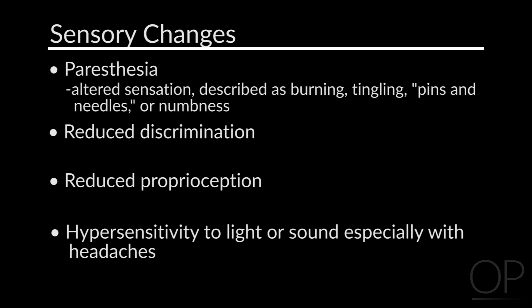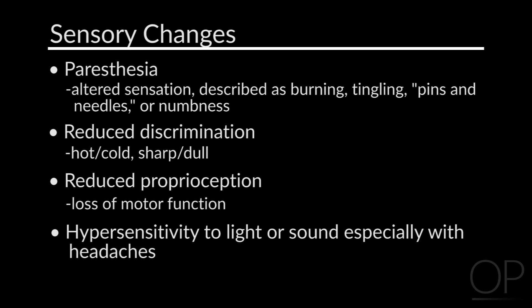Paresthesias are often described as pins and needles, stabbing, numbness, etc. Reduced sensory discrimination is when the patient has difficulty experiencing hot and cold, sharp and dull, and other sensations. Reduced proprioception results in the patient not being able to know where they're moving through space. And then there is hypersensitivity to light or sounds.